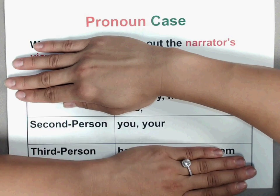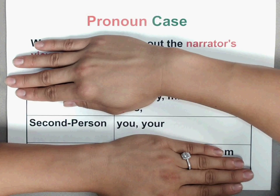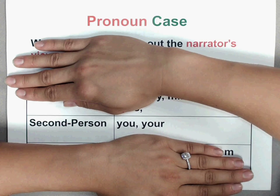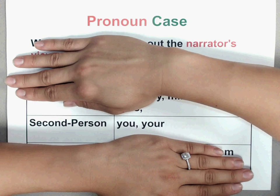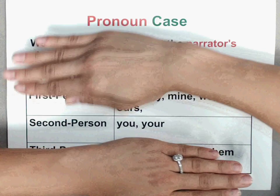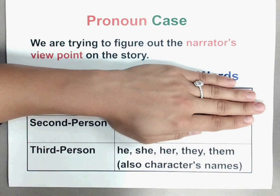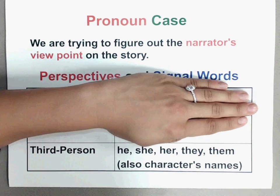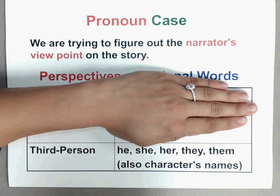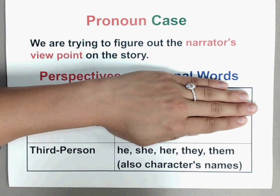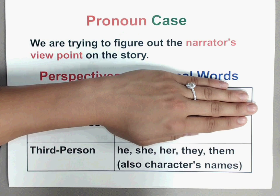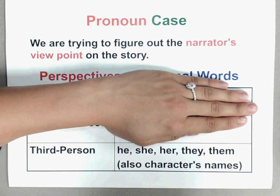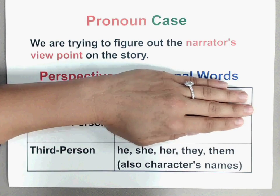If it's second person, that means that you are talking to someone. So that would be pronouns like you or your. And our last one, third person, is whenever you're talking to someone about someone else. So your pronouns would be he, she, her, they, or them. Or also, they could say other characters' names.